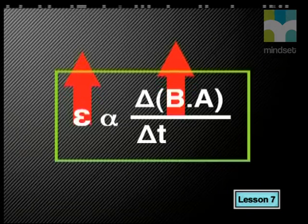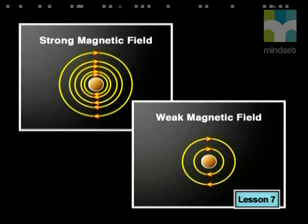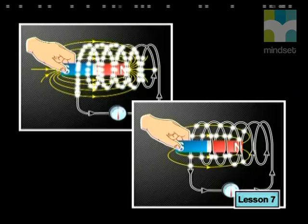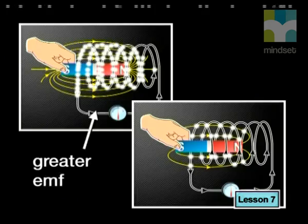The second factor that affects the induced EMF is the strength of the magnet. The magnetic flux is dependent on the strength of the magnetic field B. If we make the magnet stronger, we increase the magnetic field. Because a stronger magnet will have more field lines, it will cut through a larger area on the conductor than a weak magnet. The result of using a stronger magnet with more field lines is a greater change in magnetic flux when it moves relative to the coil, and therefore a greater EMF induced in the coil.